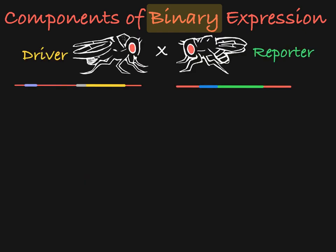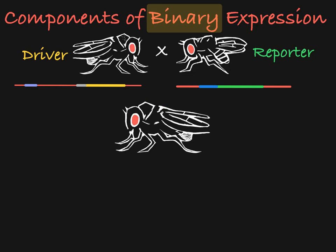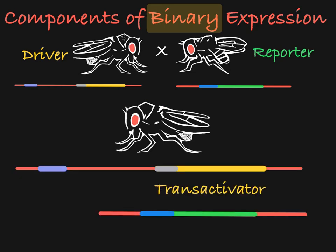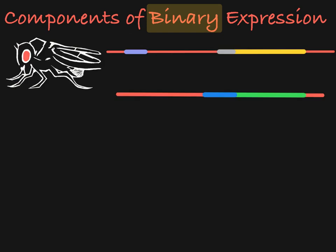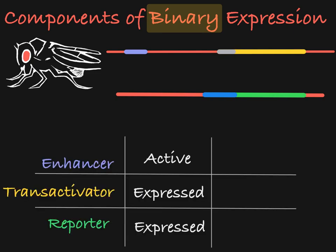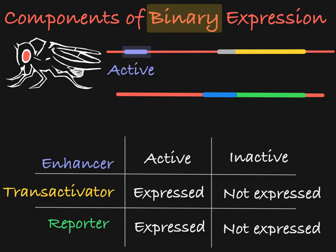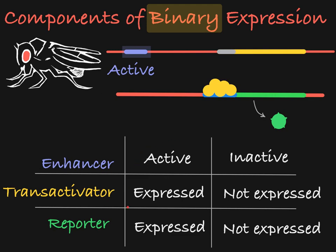So when you cross these two lines of flies, you get a generation of flies that contains both the transactivator and the reporter. Now, the transactivator is under the control of a native enhancer, so it will only be expressed in tissues in which the enhancer is active. In those tissues, the transactivator will then promote the expression of the reporter gene, meaning that only in these specific tissues the reporter will be expressed.